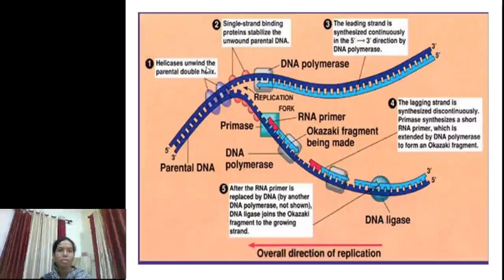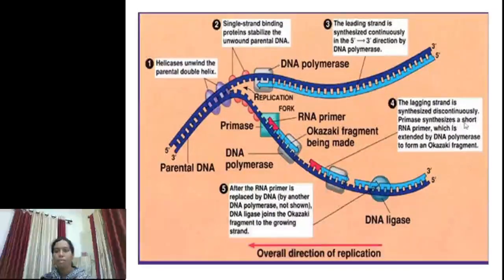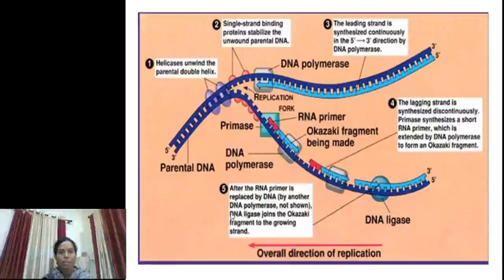This diagram shows semi-conservative DNA replication. The first step is the unwinding of the double helix in the presence of helicase. The second step is that single-strand binding proteins stabilize the unwound parental DNA. The third step is that the leading strand is synthesized continuously in the 5' to 3' direction by the enzyme DNA polymerase. The fourth step is that the lagging strand is synthesized discontinuously: the primase synthesizes short RNA primers, which are extended by DNA polymerase to form Okazaki fragments. The last step is that after the RNA primer is replaced by DNA, DNA ligase joins the Okazaki fragments to give a complete strand.